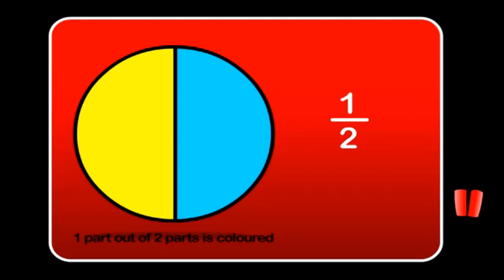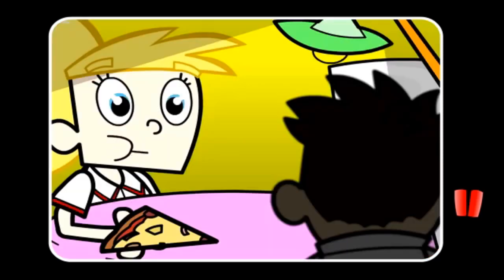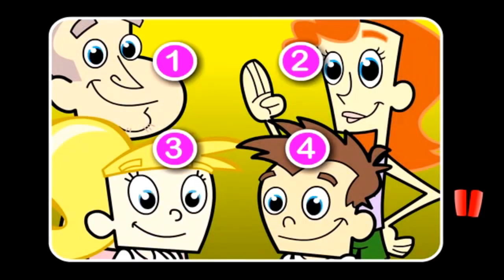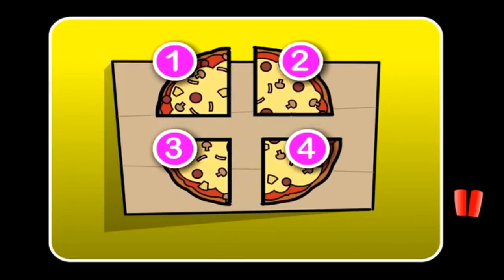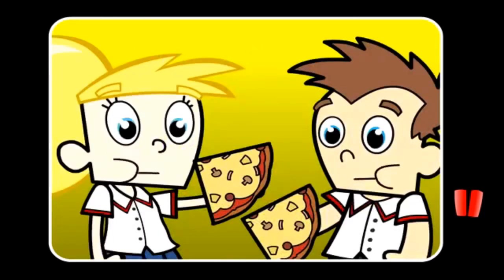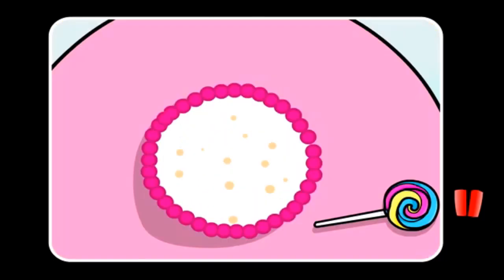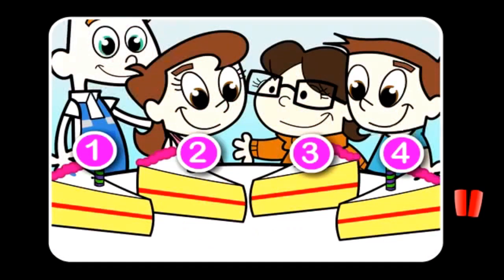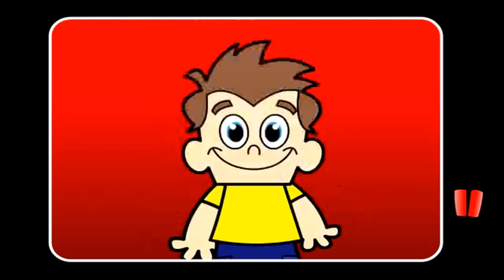This is called a fraction. Last night we had pizza for dinner. There are four people in our family and we each wanted an equal share. Dad cut the pizza into quarters — it was fair for everyone. At Dylan's birthday party, his mum cut the birthday cake into quarters so that each child got an equal share. There were four children to eat the cake.